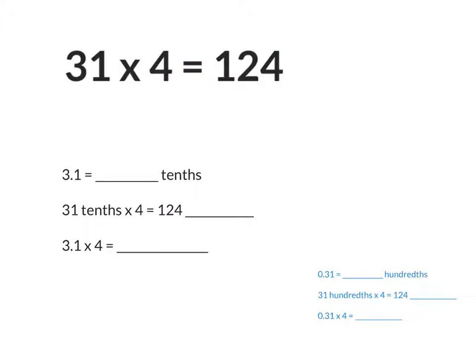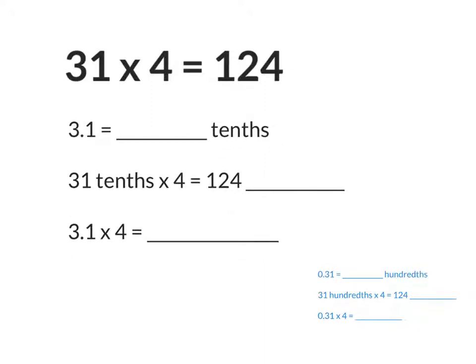This is a math problem, 31 times 4, and it does equal 124. I'm going to show you how it's related to decimal multiplication. I can rename 3.1 as how many tenths? We've been practicing this all week. 3.1 is the same as 31 tenths. So if I do 31 tenths times 4, that's 4 copies of 31 tenths. When I did 4 copies of 31, I got 124. So 4 copies of 31 tenths is 124 tenths.